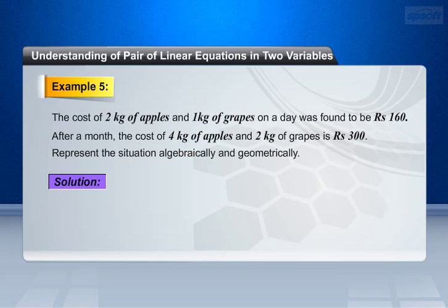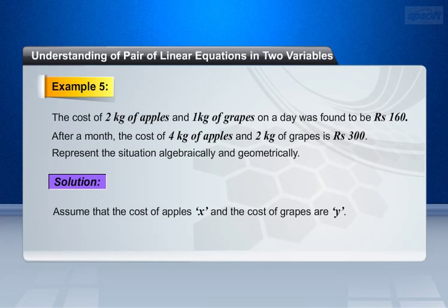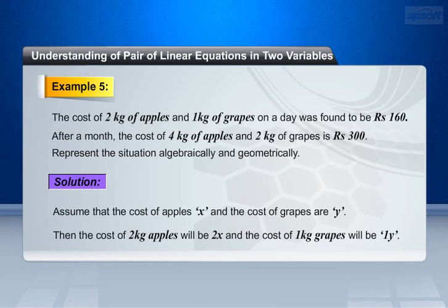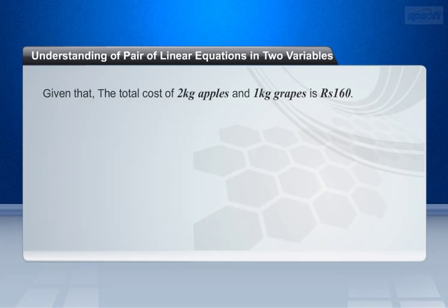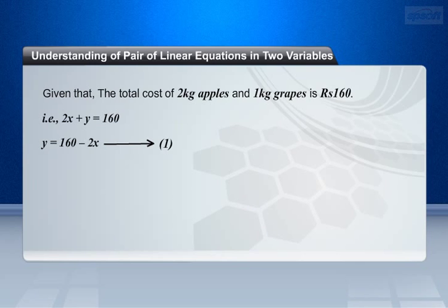Here is the solution. Assume that the cost of apples be x and the cost of grapes be y. Then the cost of 2 kg apples will be 2x, and the cost of 1 kg grapes will be 1y. Given that the total cost of 2 kg apples and 1 kg grapes is 160 rupees, that is, 2x + y = 160. This implies that y = 160 - 2x. Make it as equation 1.